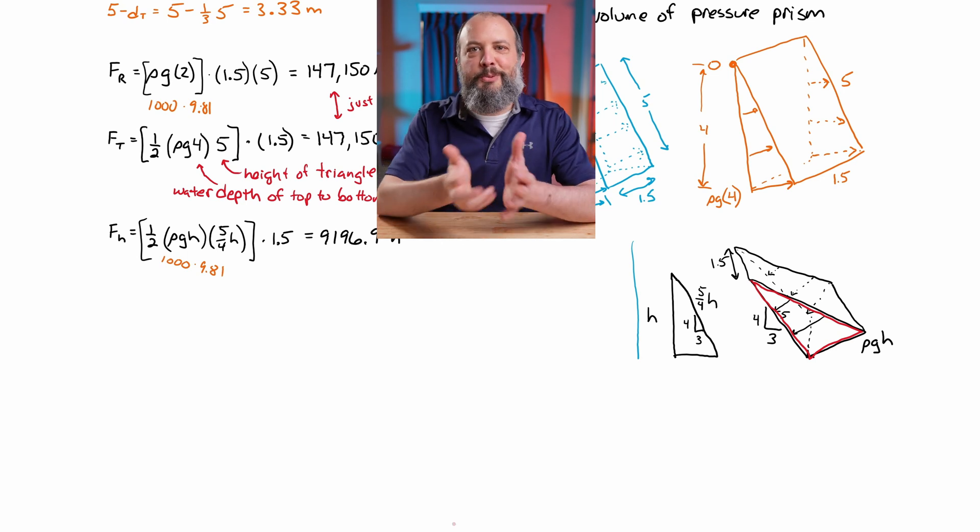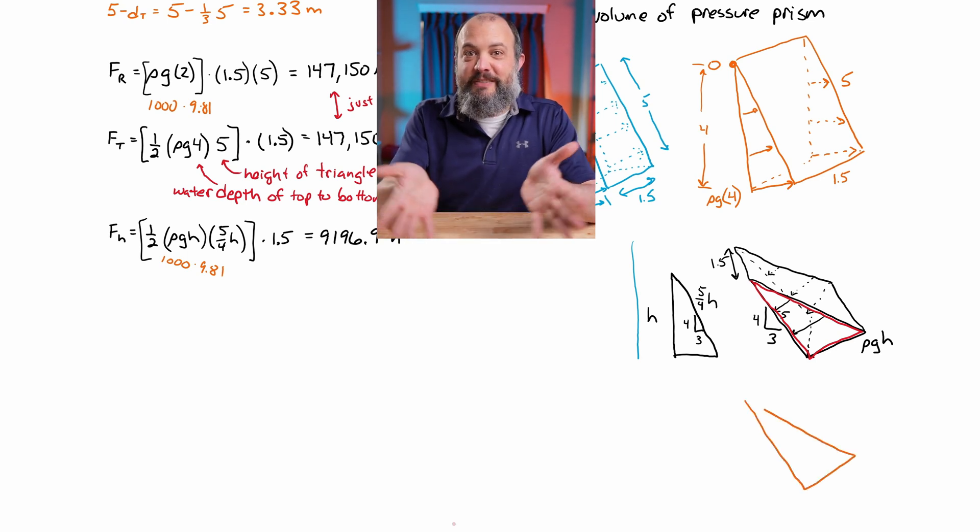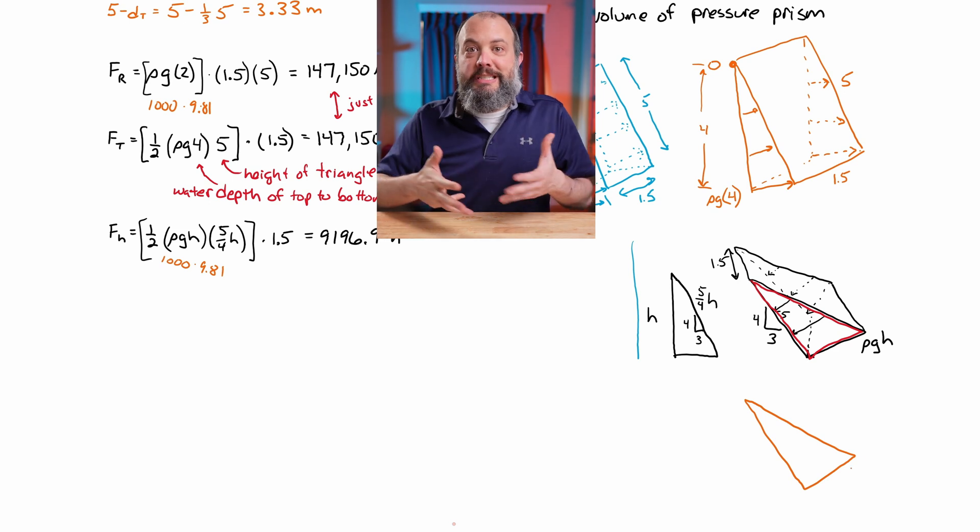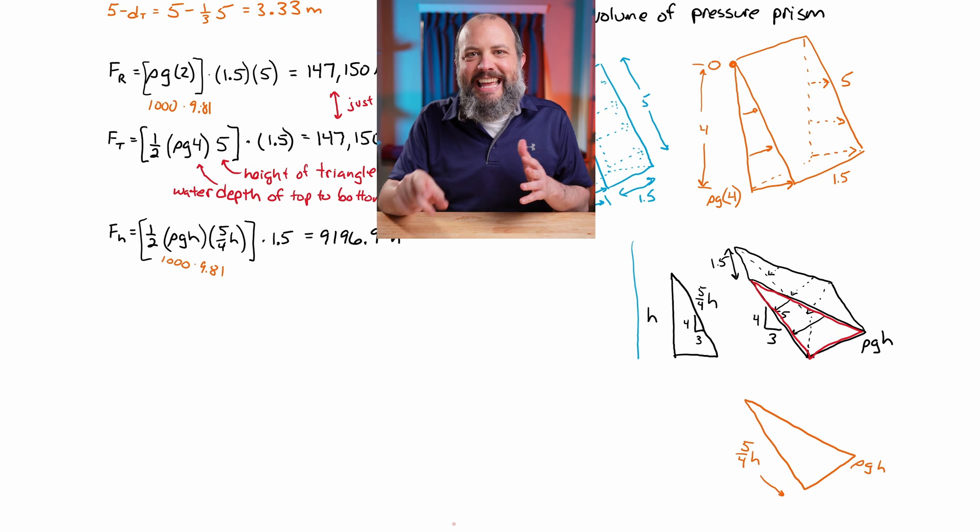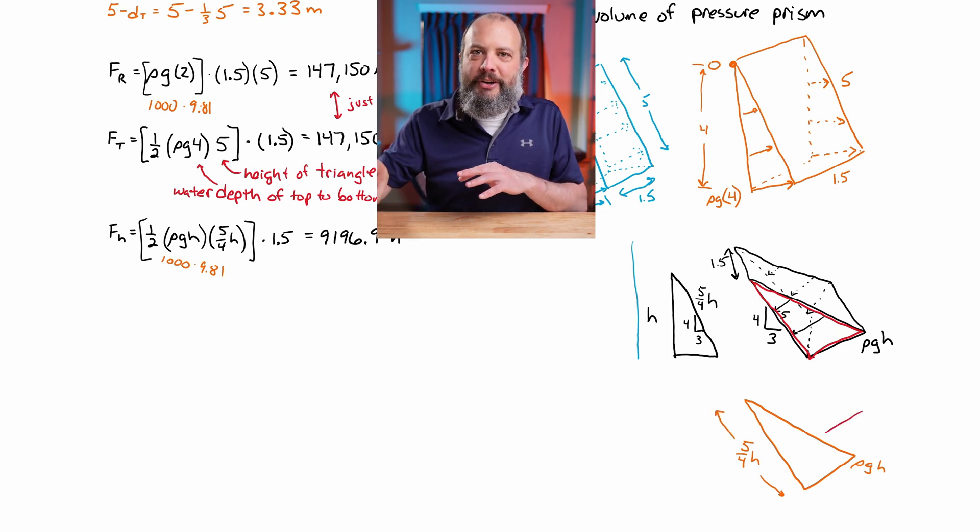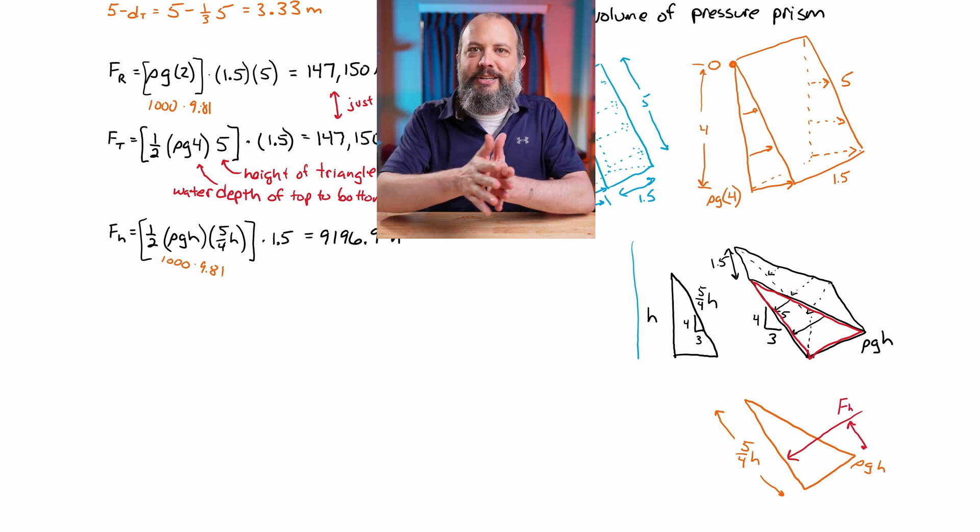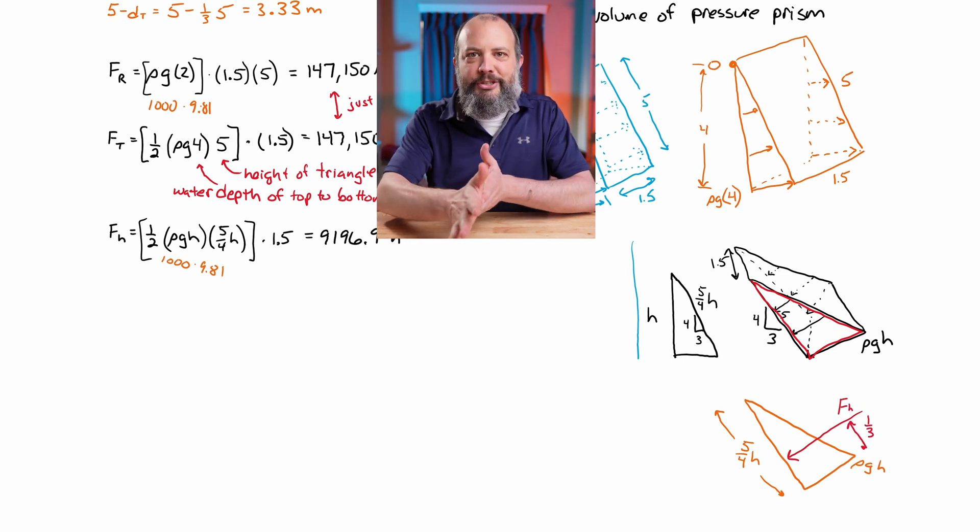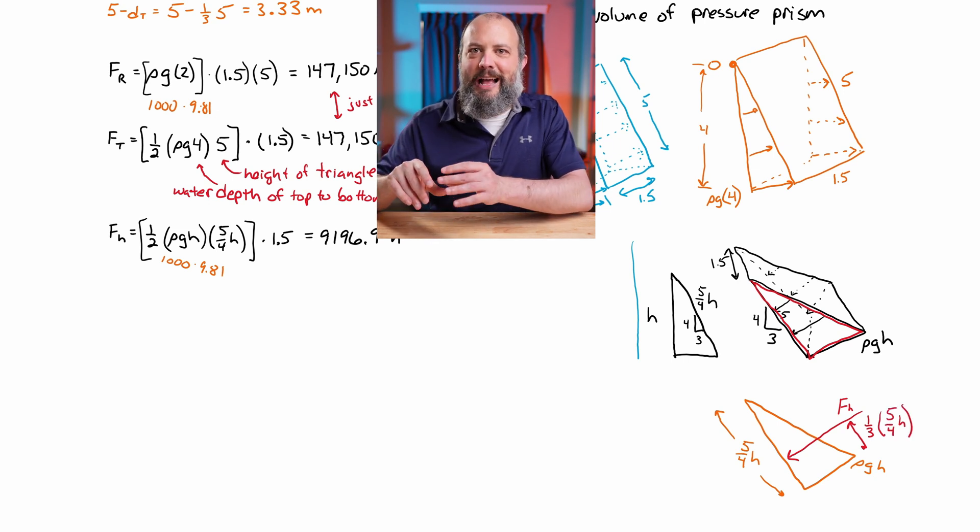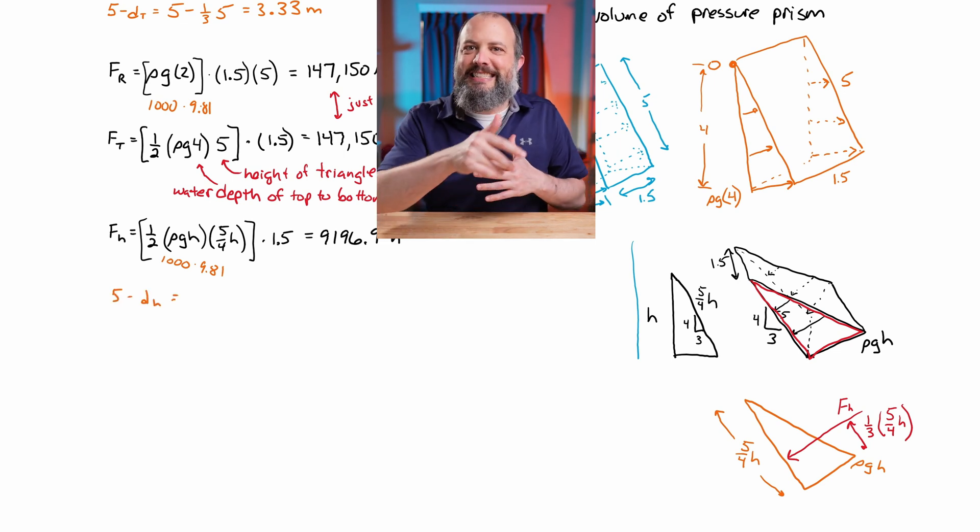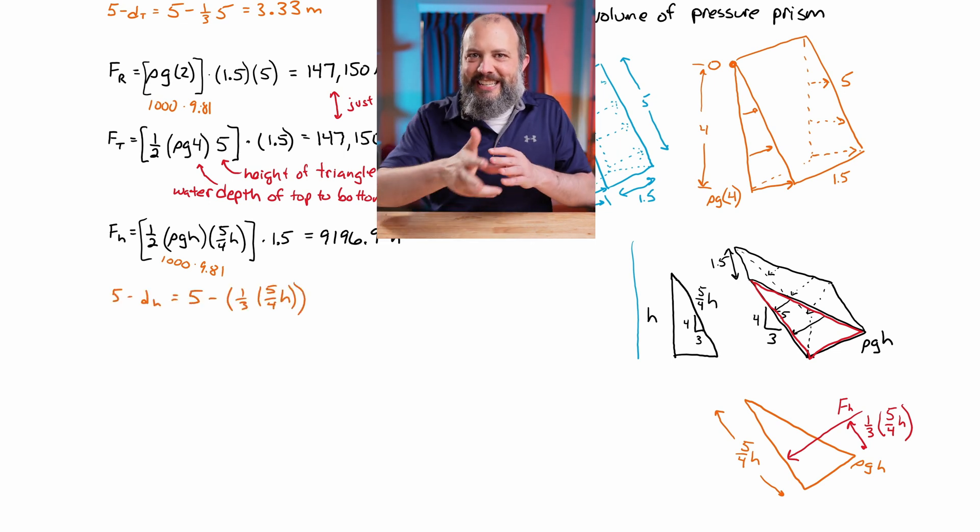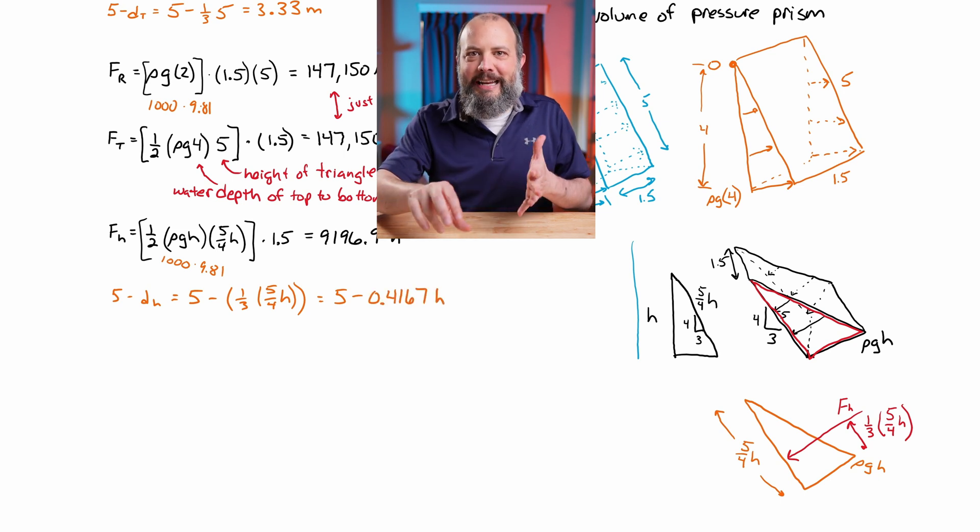And now the final piece we need for the moment equation is the line of action for this fh. Where is the centroid of this triangle on the right-hand side? Called this earlier 5 minus dh. And so dh will be 1 third of the height of this red triangle. So if I redraw this as a new orange triangle with a height of 5 fourths of h, I can see that the centroid is going to be at 1 third of 5 fourths of h. So then to get the distance from point C, which is where the force is acting for the moment, it's going to be 5 minus 0.4167 h once you do the 5 fourths times 1 third.